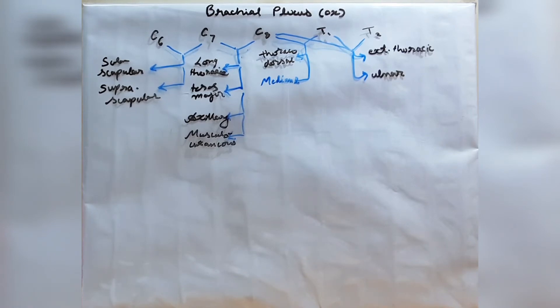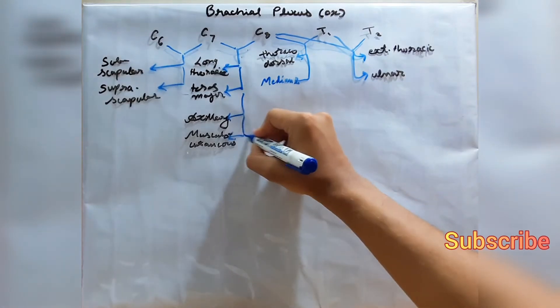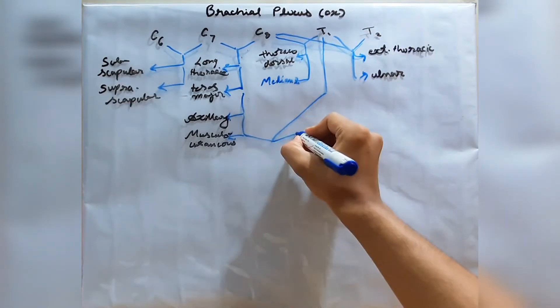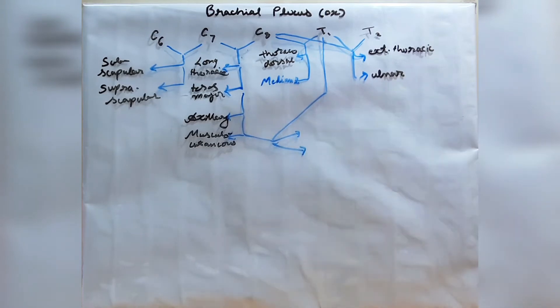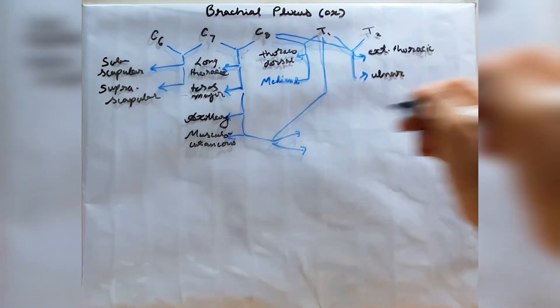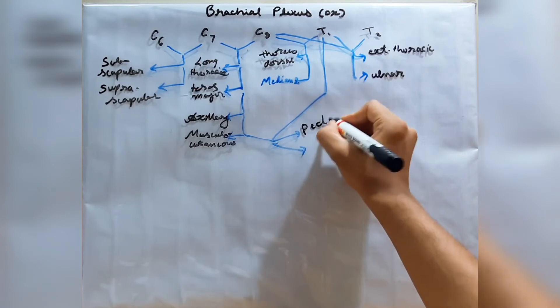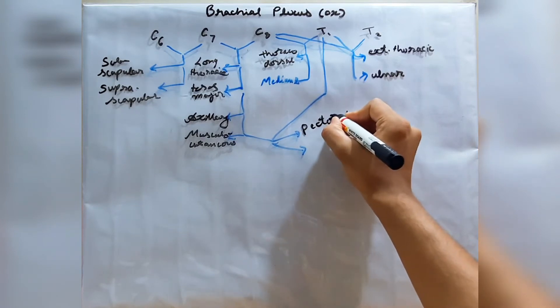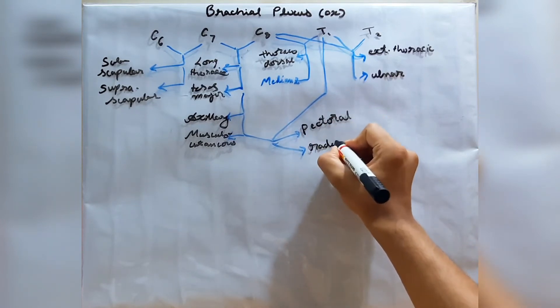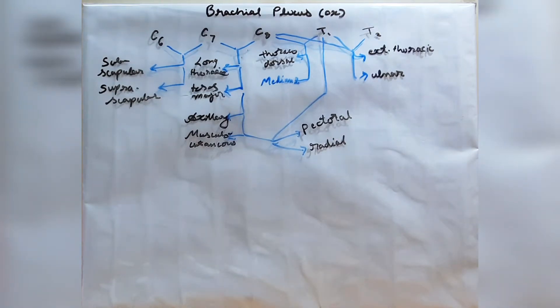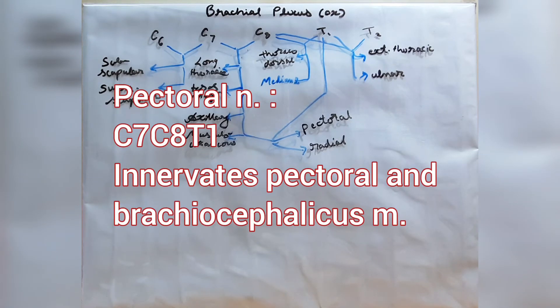Two nerves remain which are formed from C7, C8, and T1. These are the pectoral nerve and the radial nerve. The pectoral nerve innervates the superficial and deep pectoral muscles and the brachiocephalic muscle. As mentioned, I will now discuss the radial, median, and ulnar nerves in detail.